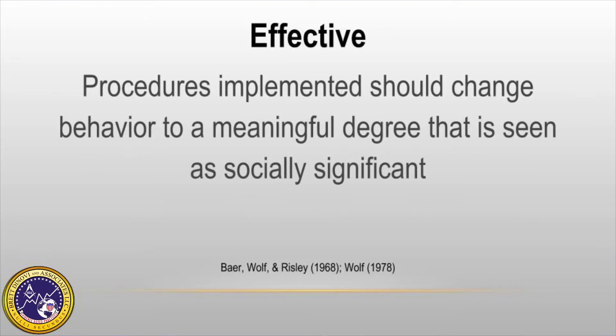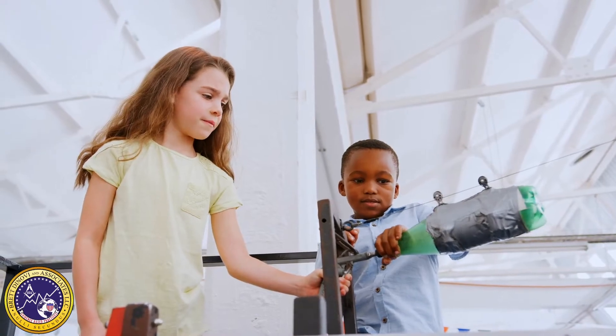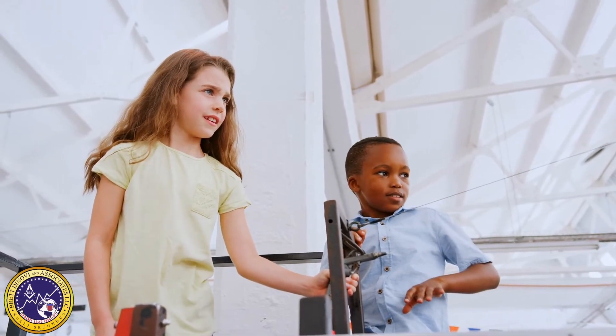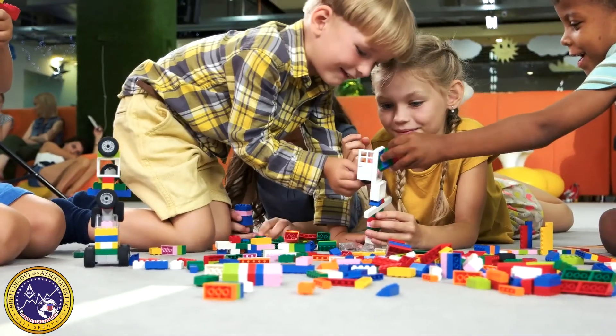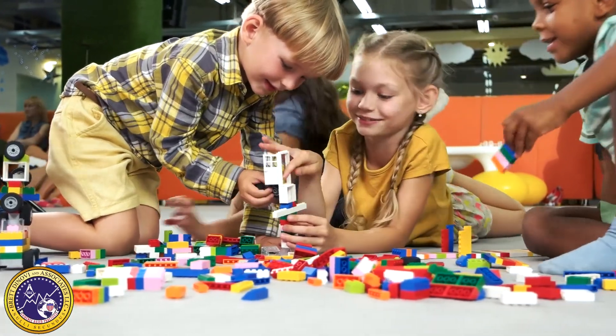E — effective. The procedures implemented should change behavior to a meaningful degree that is seen as socially significant. When examining the effectiveness of programming, if changes in the learner's life do not occur, it still may have been somewhat effective. But was the change socially valid? This is something that we always need to consider when it comes to effective programming.